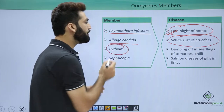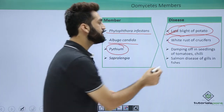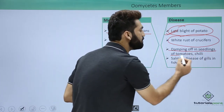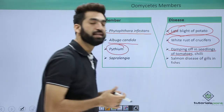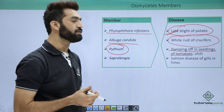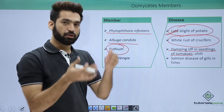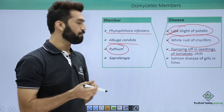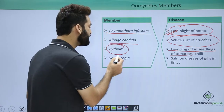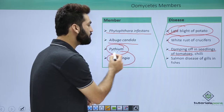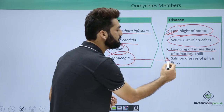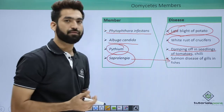The third member is Pythium, which causes damping off in seedlings of tomatoes and chili — the seedlings will collapse or damp off. Next is Saprolegnia, which causes salmon disease in the gills of fishes.